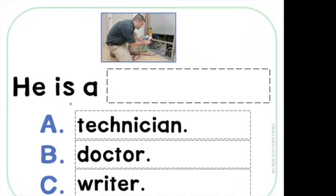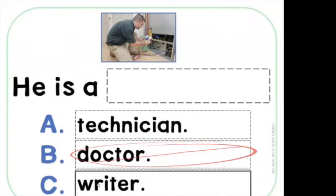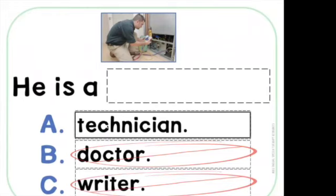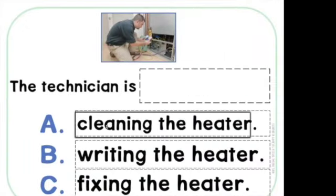So if they make a mistake, there's a whoops sound. But if they get the right answer, it kind of wiggles back and forth, and you move to the next slide.